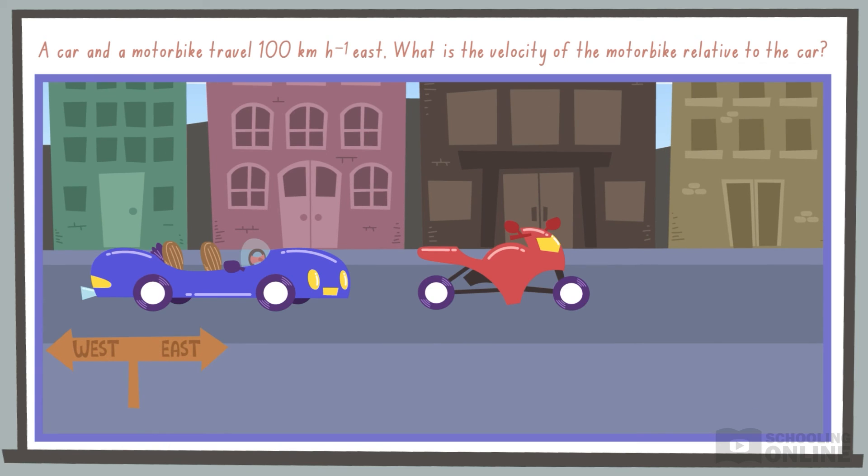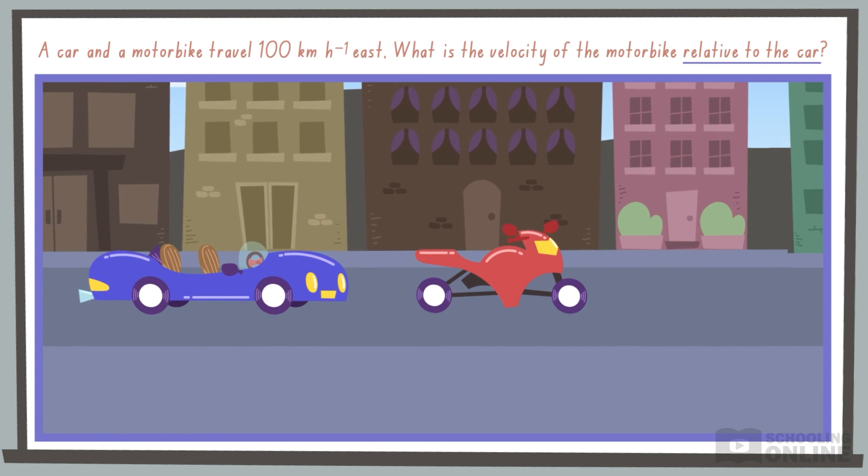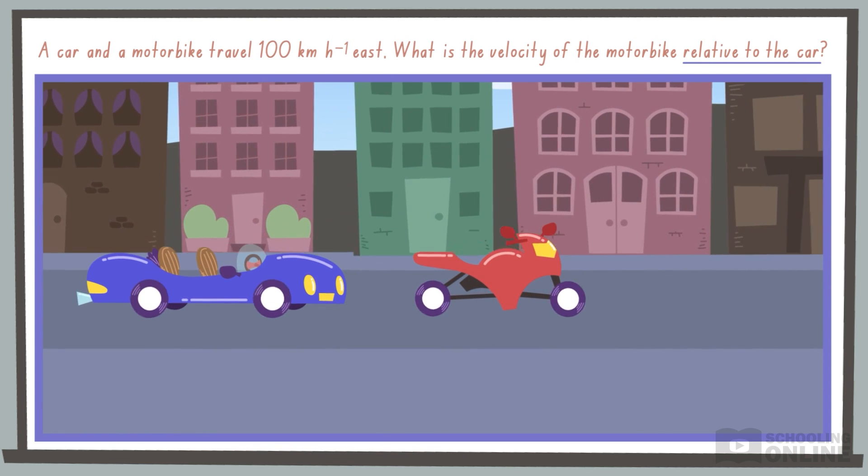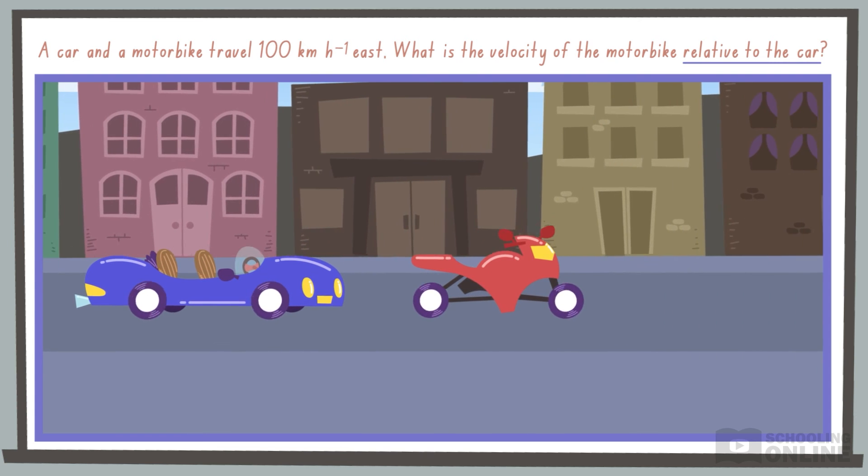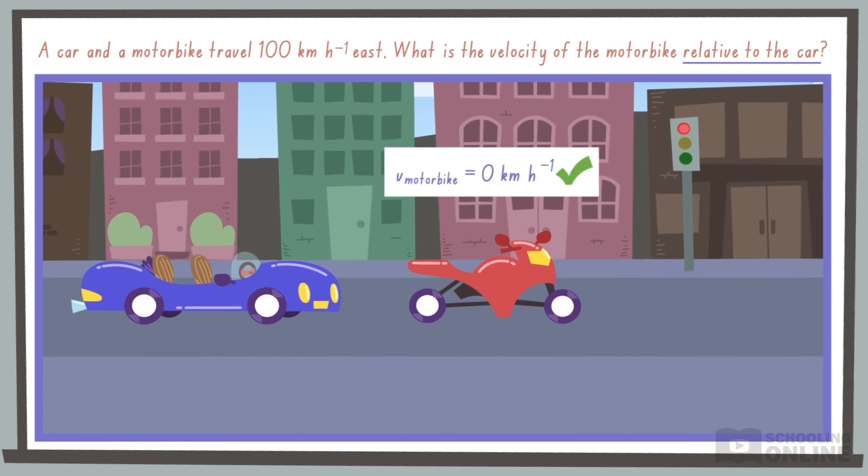To take measurements relative to the car, we should imagine ourselves sitting inside the car. They both travel at the same speed in the same direction, so the distance between them is constant and the relative velocity is 0 kilometres per hour.